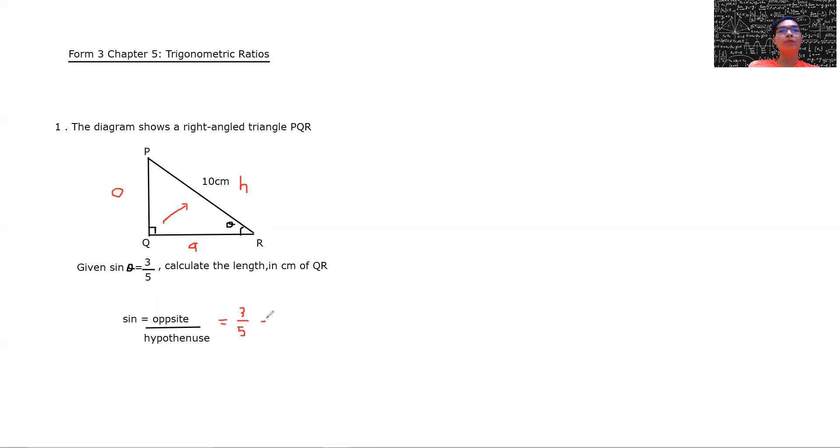But hypotenuse here is given 10 cm. So what we do is, we just take 5 times 2 equal 10. Therefore, 3 times 2 equal 6. Okay, so here, our hypotenuse is 10 cm and then our opposite is 6 cm.